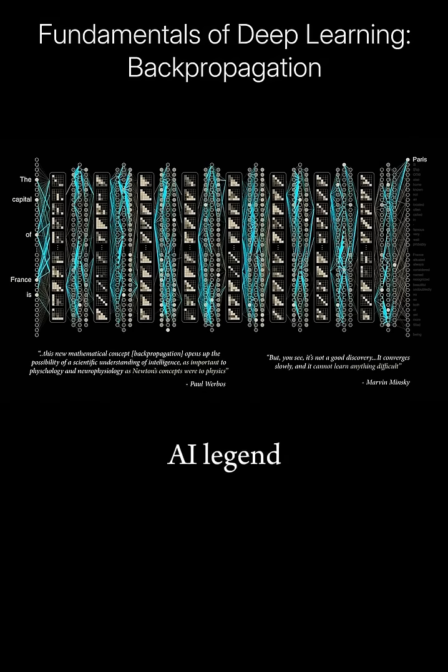When Worbos took his discovery to AI legend Marvin Minsky, Minsky rejected it outright, claiming that backpropagation would not be able to learn anything difficult.